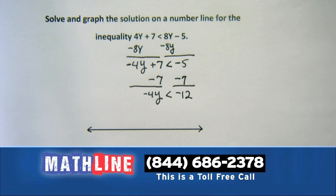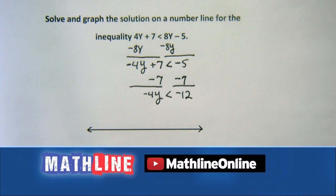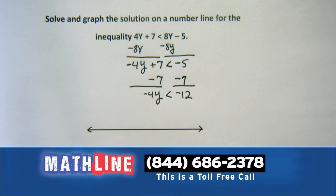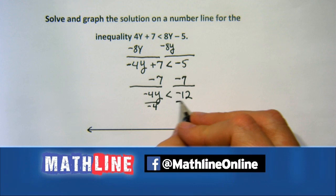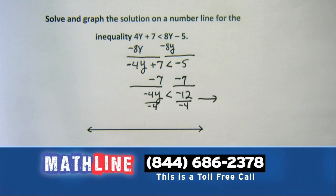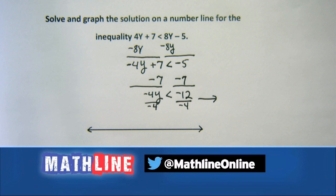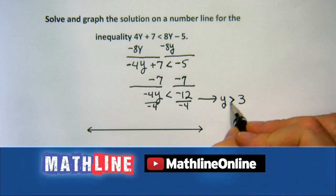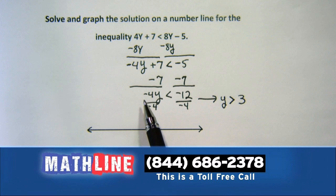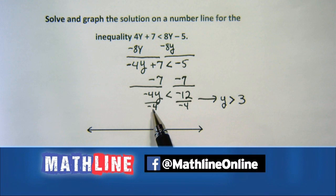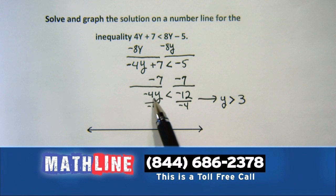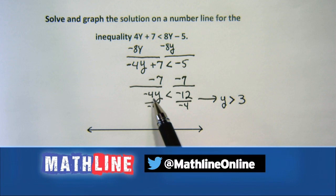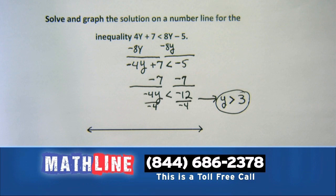But we have a little problem. When we divide or multiply by a negative with an inequality, that means we're switching the direction of the inequality sign. We divide by negative 4 because we want to know what 1y looks like. Negative divided by negative gives us a positive 3 on the right-hand side. But what was less than now becomes greater than — what was negative has become positive, what was positive becomes negative. That only happens when you divide or multiply by a negative value.